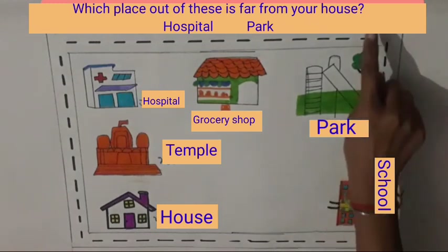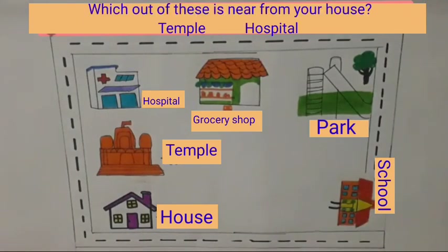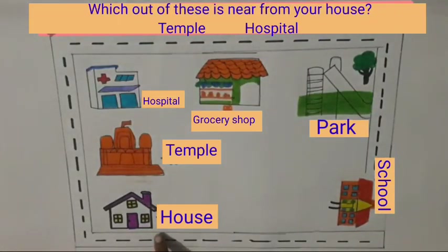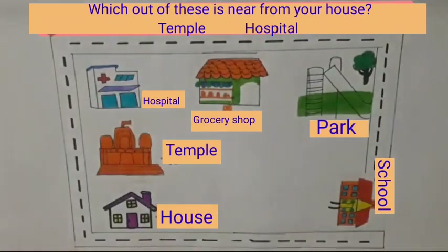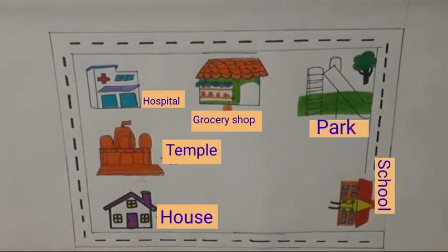Now we will put a tick on it. Which out of these is near from your house — temple or hospital? This is the way to temple from the house and this is the way to hospital from the house. So, the temple is near from your house. We will put a tick on this. Dear students, you have learnt how we can reach temple and hospital with the help of ways.